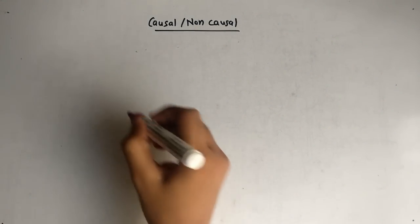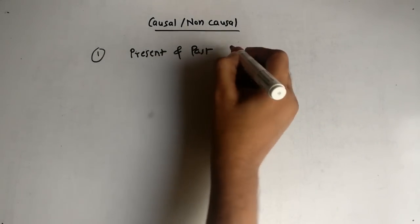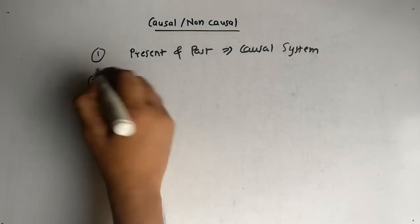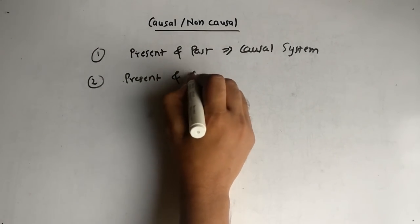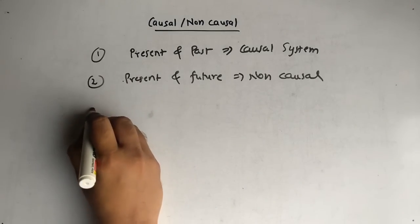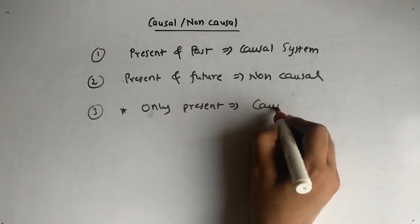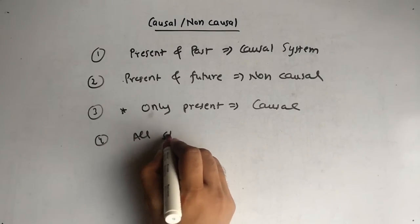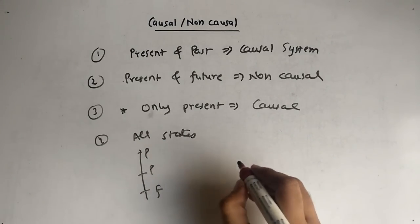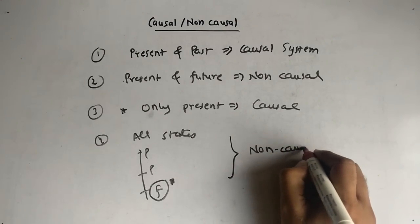Let's sum up everything. First: whenever you see present and past, it is a causal system. Second: whenever you see present and future, it is a non-causal system. Third unique case: when it is only present, it is causal. Fourth: when all states — present, past, and future — are present, it is non-causal. Basically, whenever you see any future value, then it is a non-causal system.